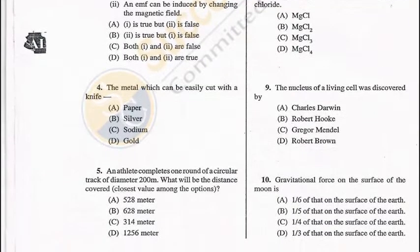Question 4: The metal which can be easily cut with a knife — there are two metals: sodium and potassium. So C is the correct answer.